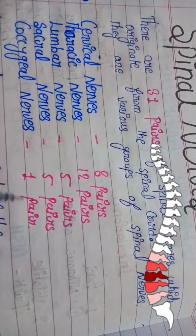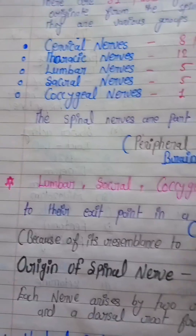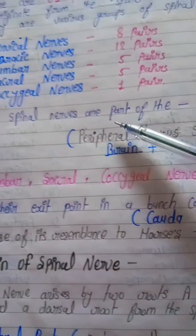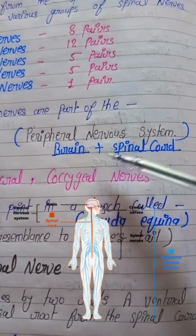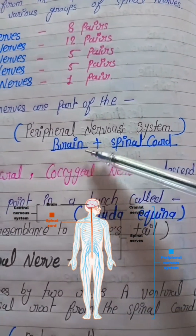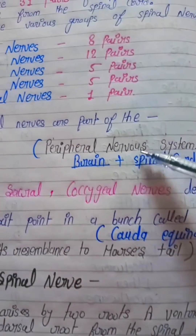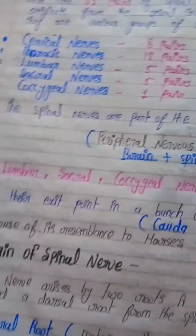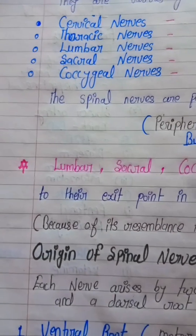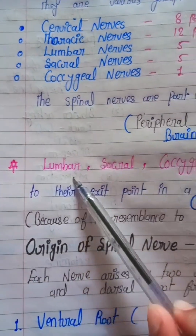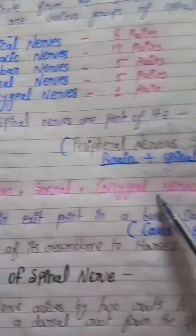The spinal nerves are part of the peripheral nervous system, which is made up of the brain and spinal cord together. Now, an important point: the lumbar, sacral, and coccygeal nerves descend to their exit points.